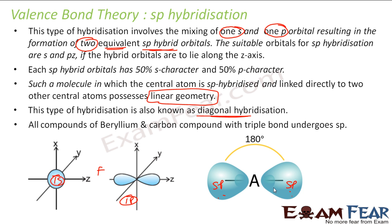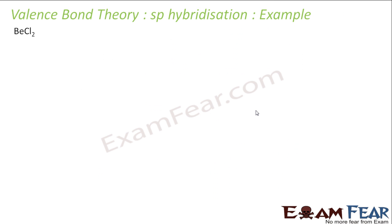All compounds of beryllium and carbon compounds with triple bond go for sp hybridization. Beryllium always goes for sp hybridization and carbon with triple bond, for example, ethyne, it goes for sp hybridization. So let us take an example of sp hybridization.